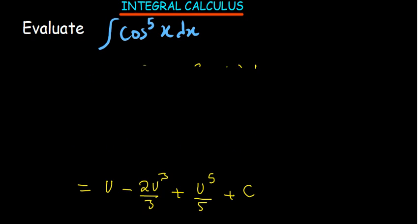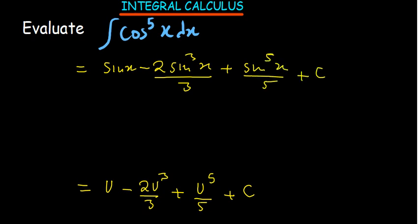And from this point we can simply go direct and substitute where there is u. Remember we said u should be equal to sine of x. So this is going to be sine of x minus 2 sine cubed x over 3, and then plus sine to the power 5 x over 5, and then plus a constant c. If I want, I can factorize out sine because it's common, and that will leave us with 1 minus 2 over 3 sine squared x, and then plus sine to the power 4 x, and then plus a constant c.